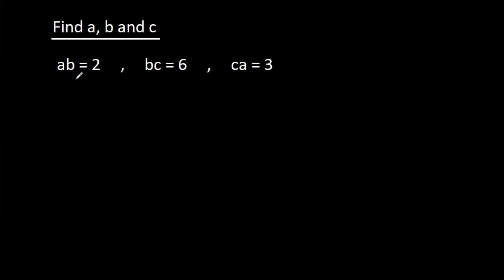In this video, we have been given that AB is equal to 2, BC is equal to 6, and CA is equal to 3. Then we have to find A, B, and C.